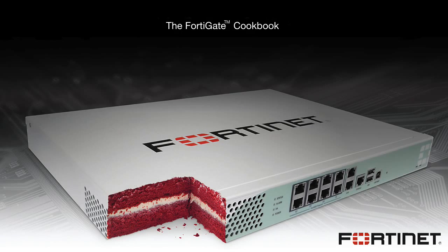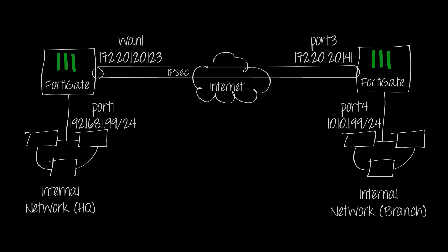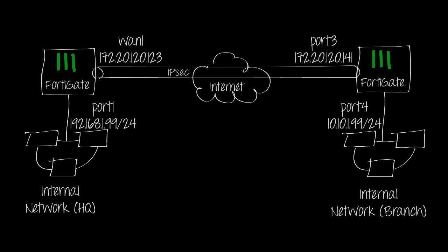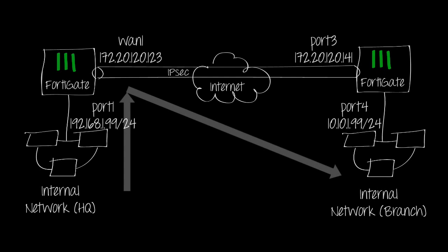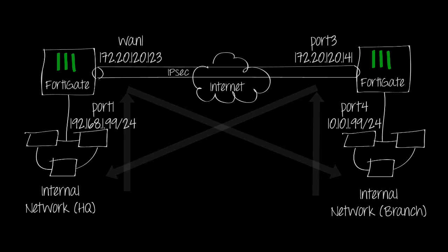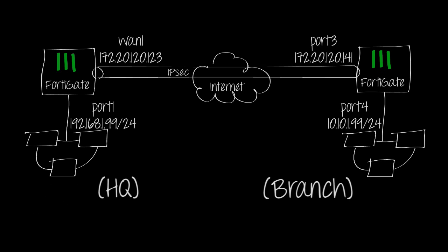In this video, you're going to learn how to configure a secure IPSec VPN connection between two locations. With a FortiGate at each location, properly configured, both locations' users will be able to securely access local addresses on the other location's internal network, without opening either network to wider access from the Internet. For the purposes of this recipe, the two locations will be known as Headquarters and Branch.